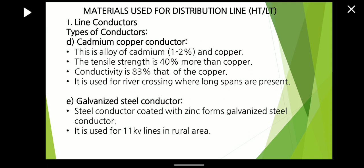The next type of conductor is the cadmium copper conductor. This is an alloy of copper and cadmium, with cadmium inserted at 1 to 2%. The tensile strength is 40% more than copper, and conductivity is 83% that of copper. It is used for river crossings where long spans are present, and also for telegraph and telephone lines.